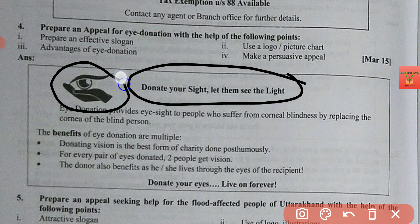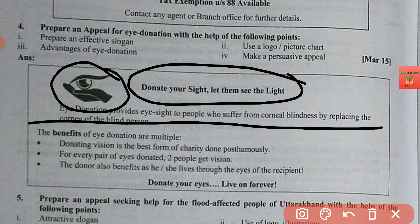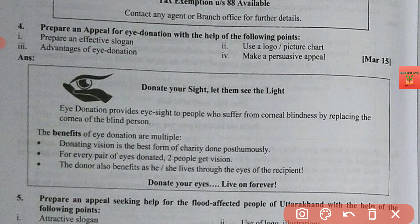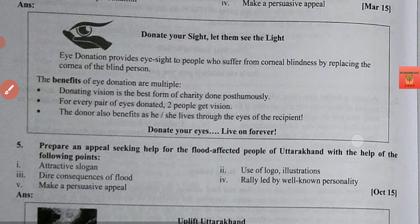The second step is a picture or logo. Since this is an eye donation appeal, you need to make an eye-related picture. Next, include the advantages of eye donation and make a personal appeal. Small information about the advantages and benefits of eye donation has been given here, and the logo has been included. However, one section is missing which we include in Maharashtra Board.